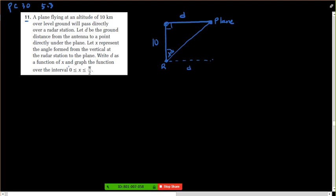So write D as a function of X, and graph the function. So what do you know about this relationship? Well, you've got an angle, you've got the opposite side, and you've got the adjacent side. So that's tan, isn't it? So you would say tan of X equals the opposite side, which is D, over the adjacent side, which is 10.